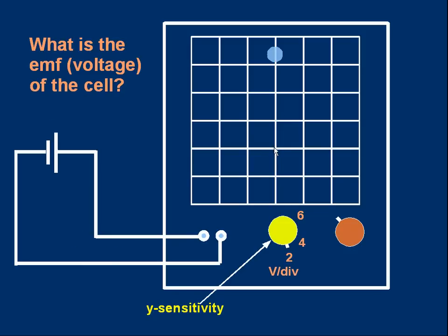Let's do a little problem. Here's a cell connected to the Y inputs. The Y sensitivity is set to two volts per division. And the spot is up here now. It was in the center. When we connected the cell, it jumped up here. The question is, what is the EMF? Or if you prefer, what is the voltage from the cell? Pause the video and see if you can work out from the information on the screen what the voltage is.